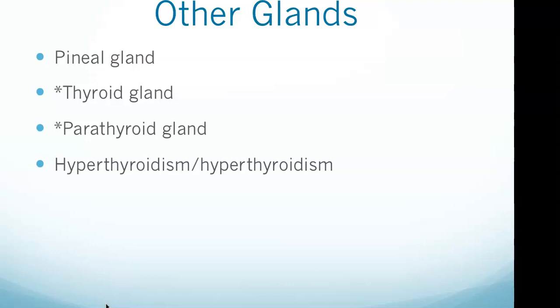The thyroid and parathyroid glands are located in the neck and control metabolism and calcium balance. The thyroid gland releases thyroxin and calcitonin — thyroxin controls the rate of metabolism while calcitonin lowers calcium levels. The parathyroid gland releases parathormone, which raises blood calcium levels. The parathyroid gland works in opposition to calcitonin.